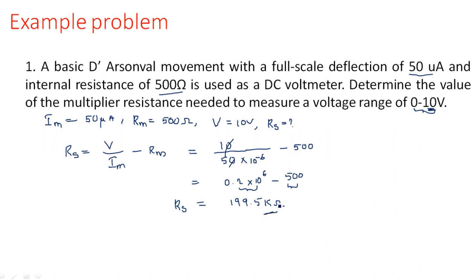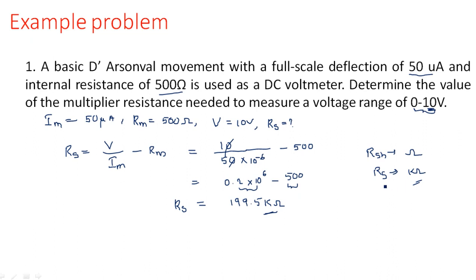If you observe the difference between shunt resistance and series resistance calculations: the shunt resistor values are in terms of only ohms, but here the series resistor RS is in kilo ohms. In coming problems you may have hundreds or thousands of kilo ohms depending on the voltage range — for 10 or 20 volts it is kilo ohms, but for maximum voltage ranges like a thousand volts, you need to go up to mega ohms.